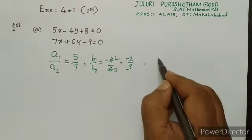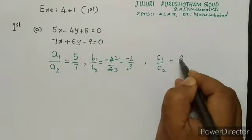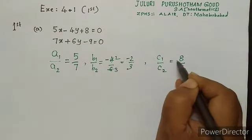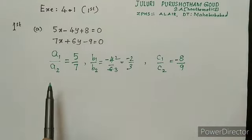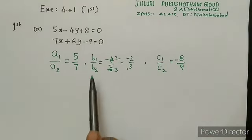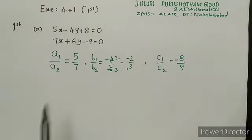And in the same way, c1 by c2. That equal to 8 by minus 9. That minus, we have to write for the numerator only. So once you check here, a1 by a2 is equal to 5 by 7, but b1 by b2 is equal to minus 2 by 3, but c1 by c2 is equal to minus 8 by 9.